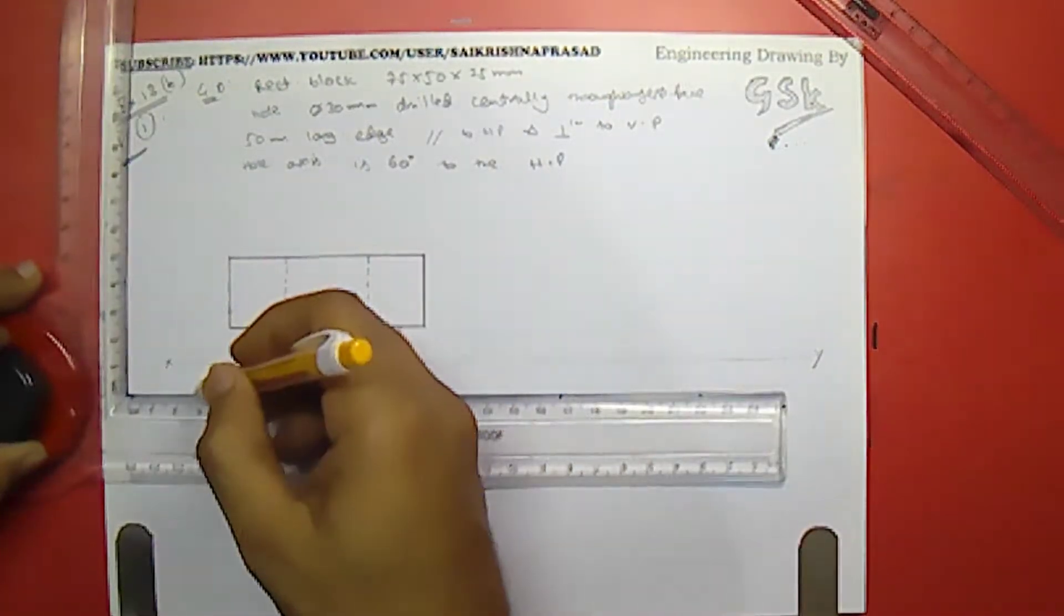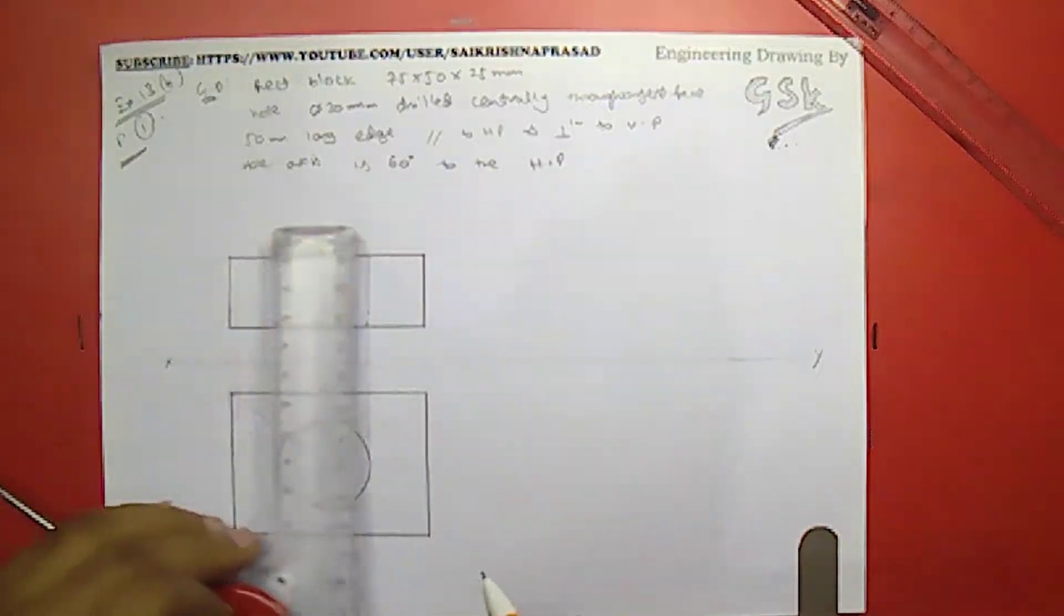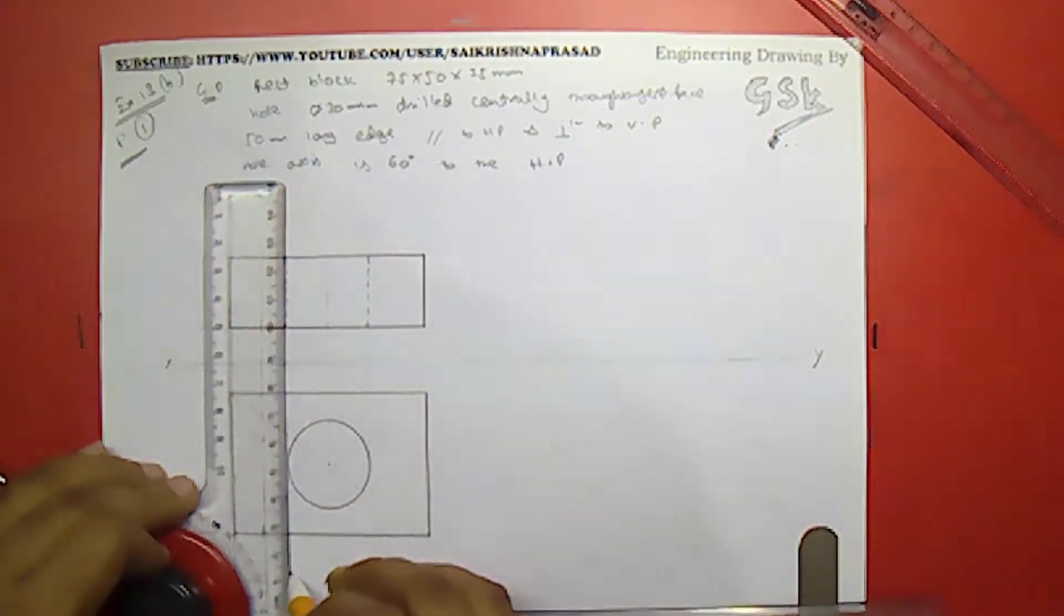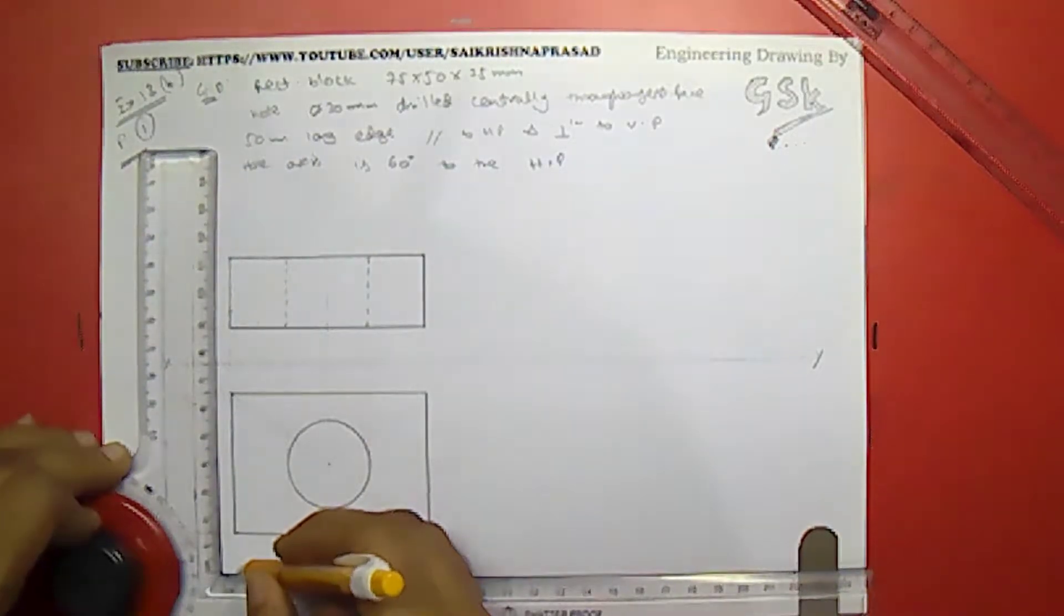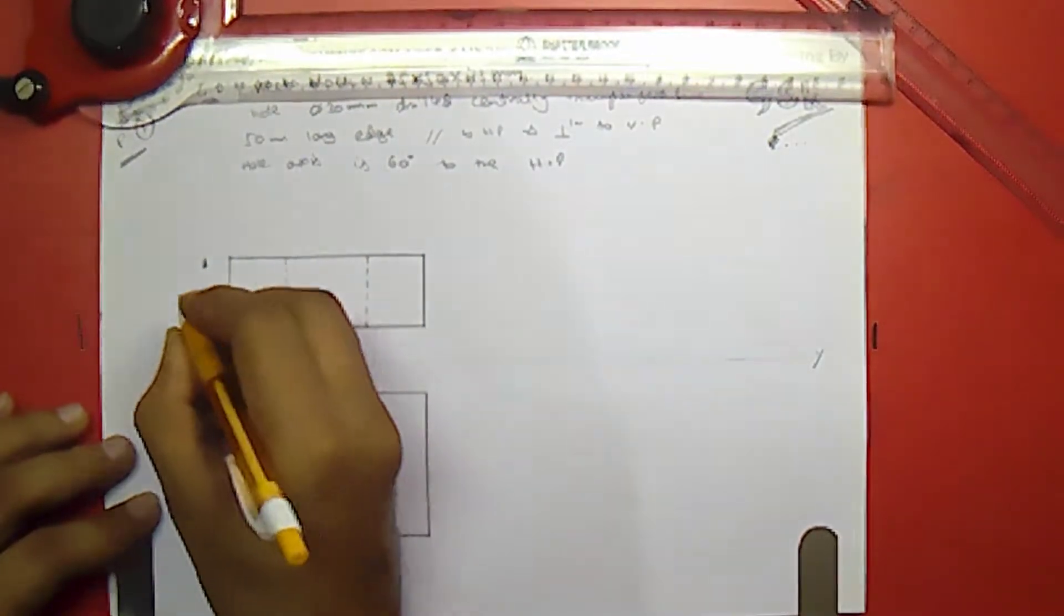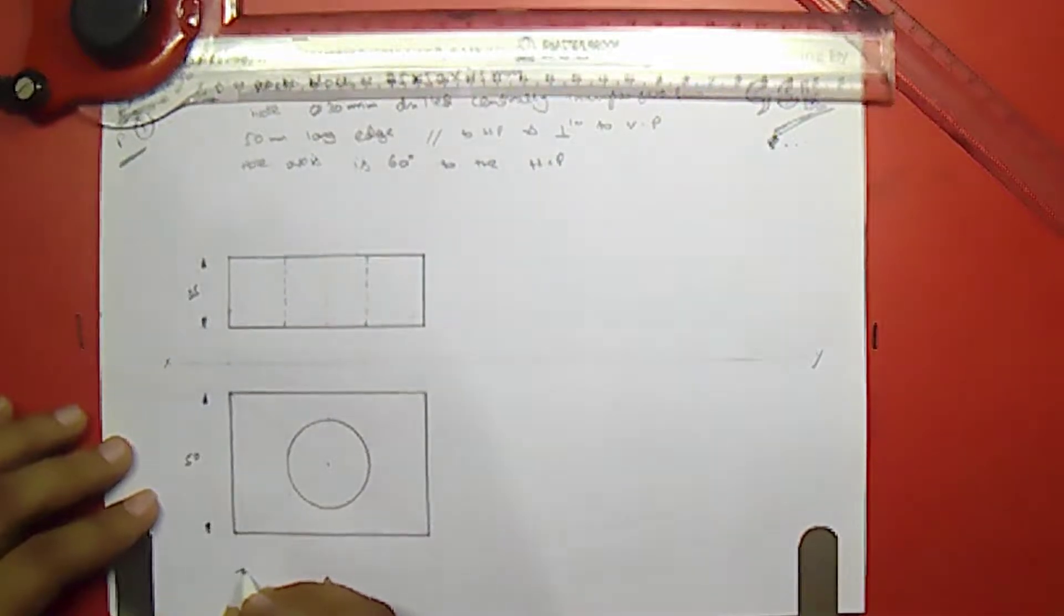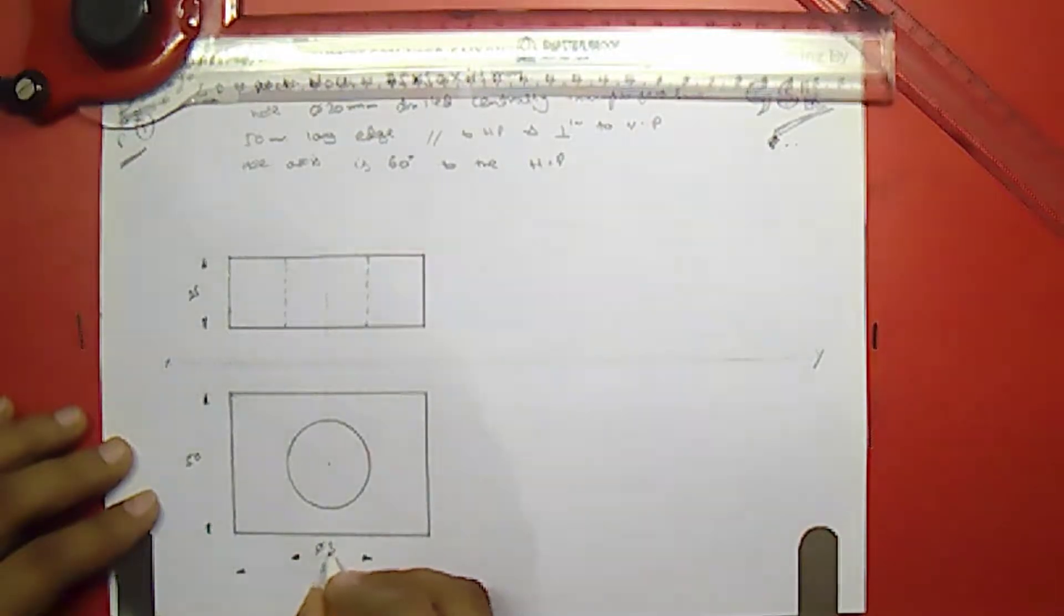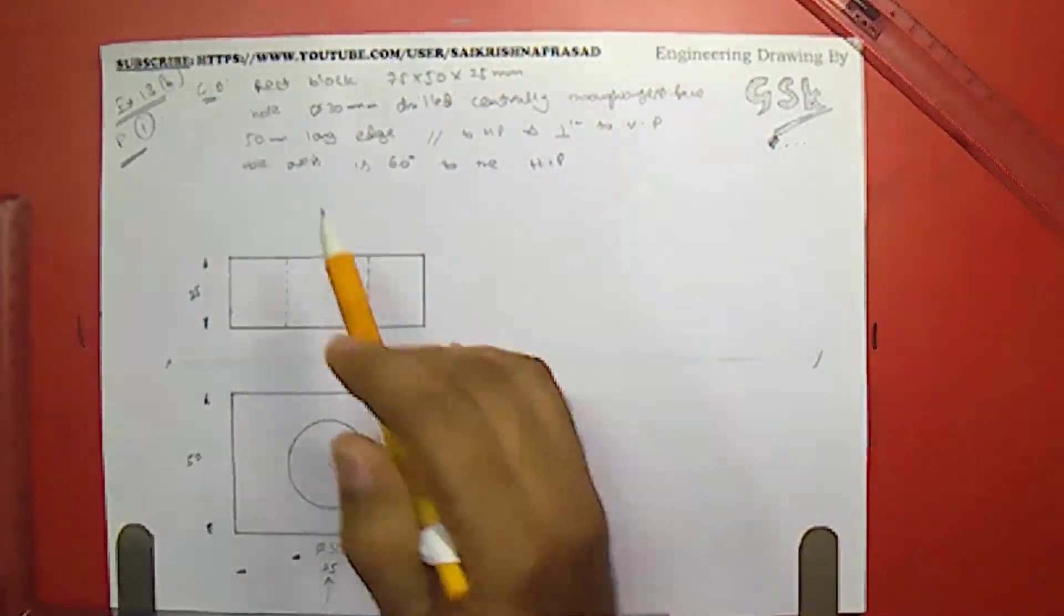So let us reference the dimensions over here. This is 25, the thickness of the block. And this is the width of the block, 50. And this is the length of the block, 75. And this would be the diameter of the hole drilled centrally on the largest face. This is diameter 30. So we have finished the initial figure of this rectangular block with the central hole.